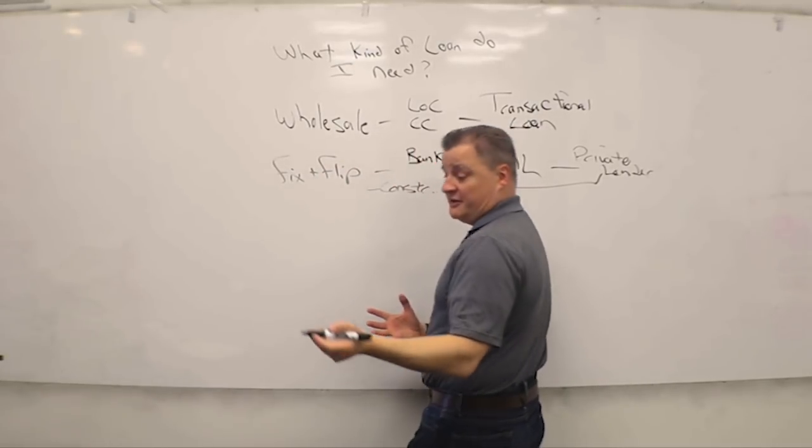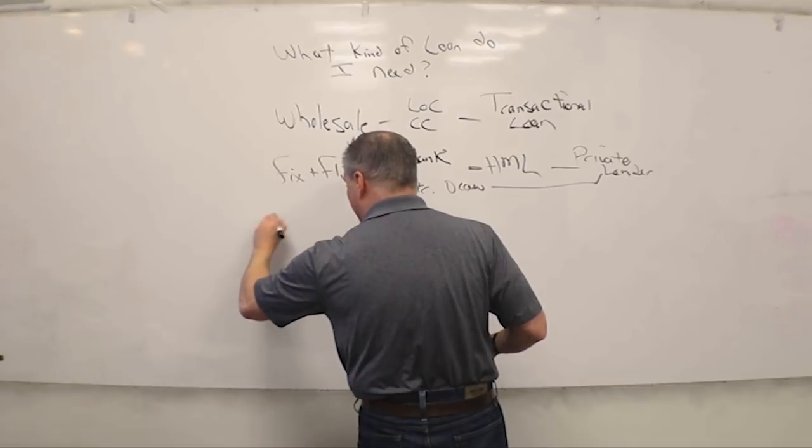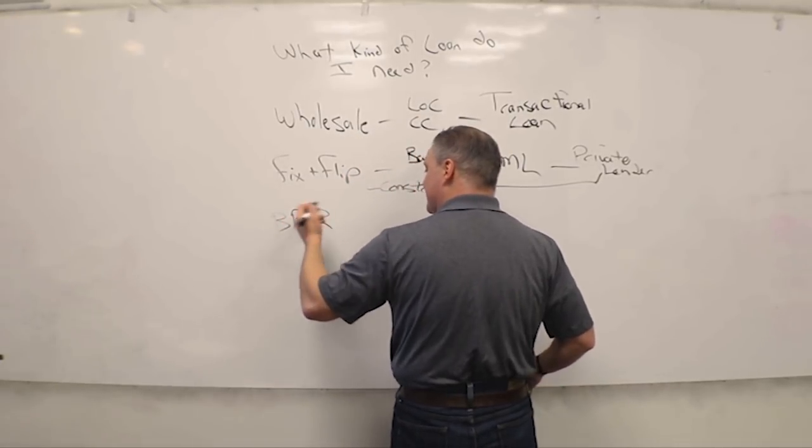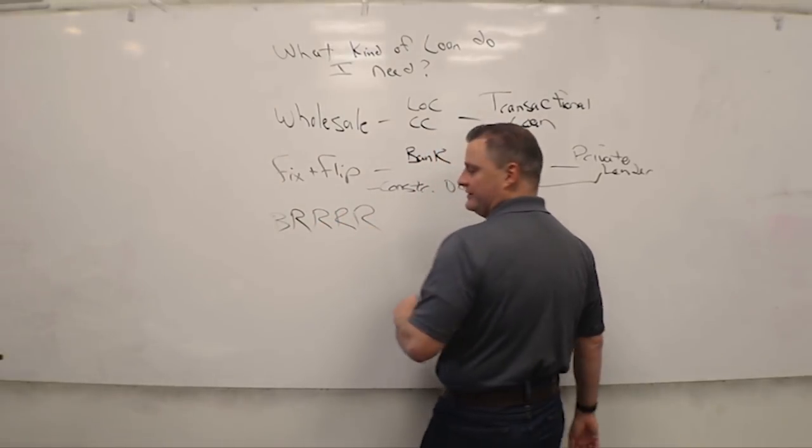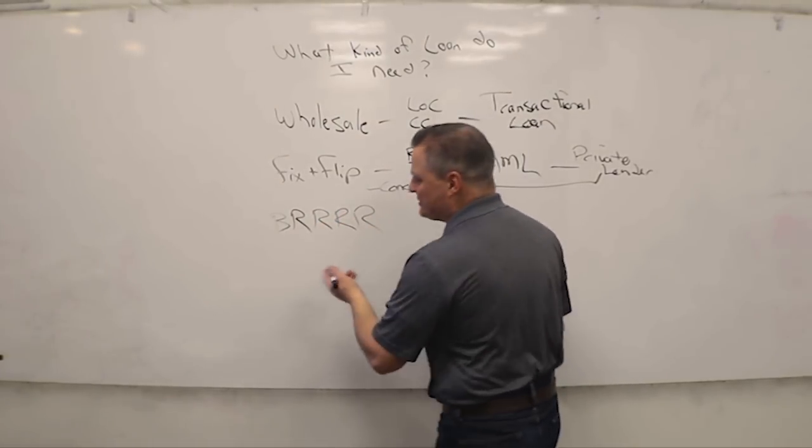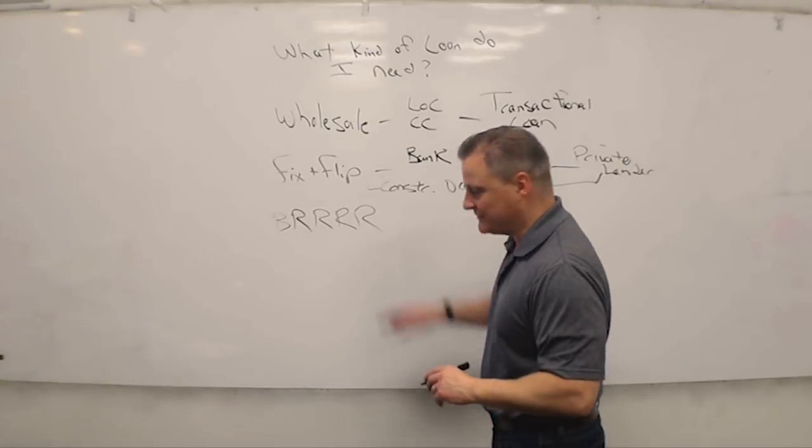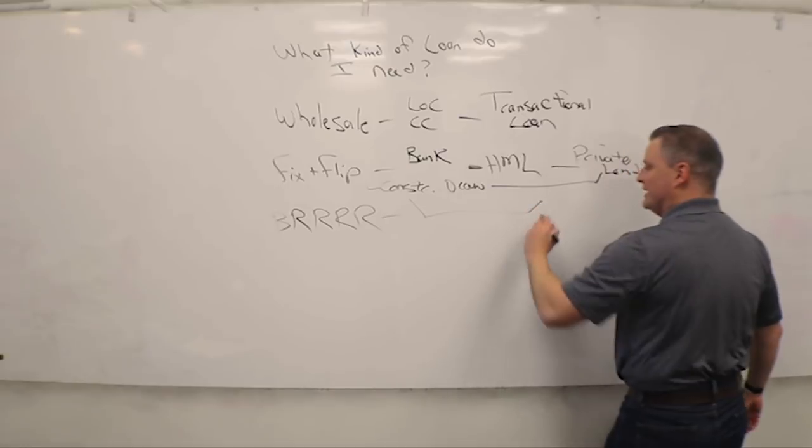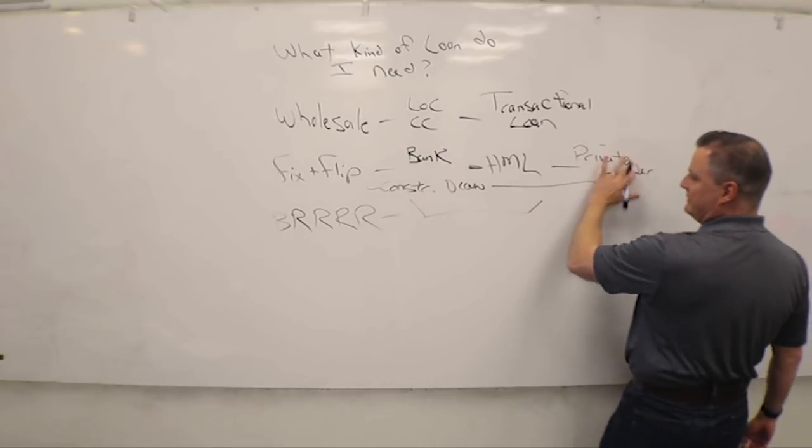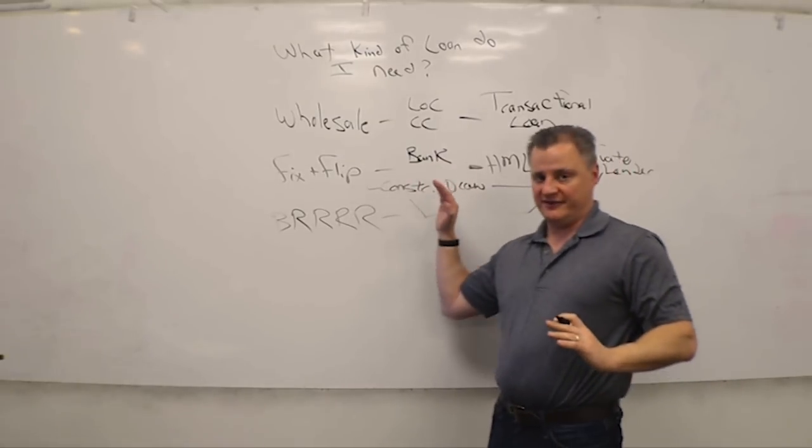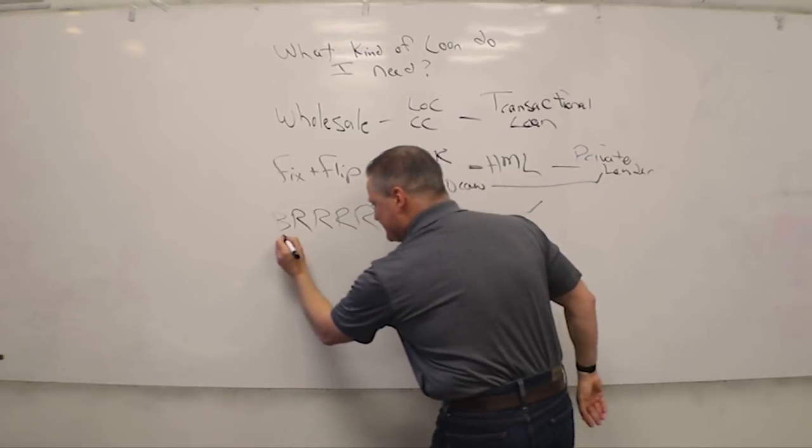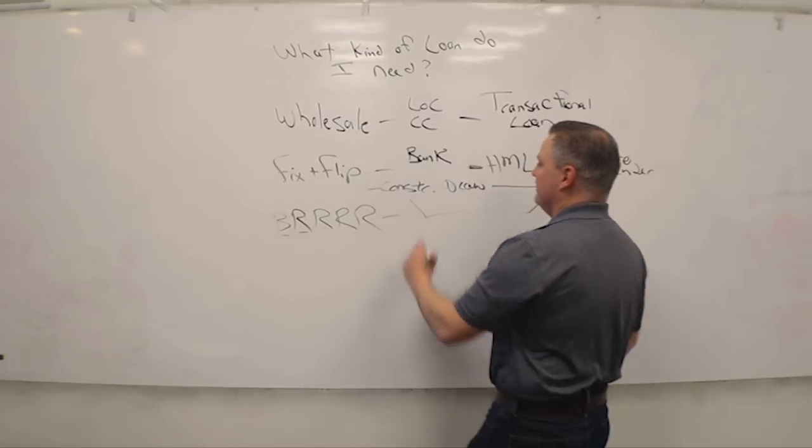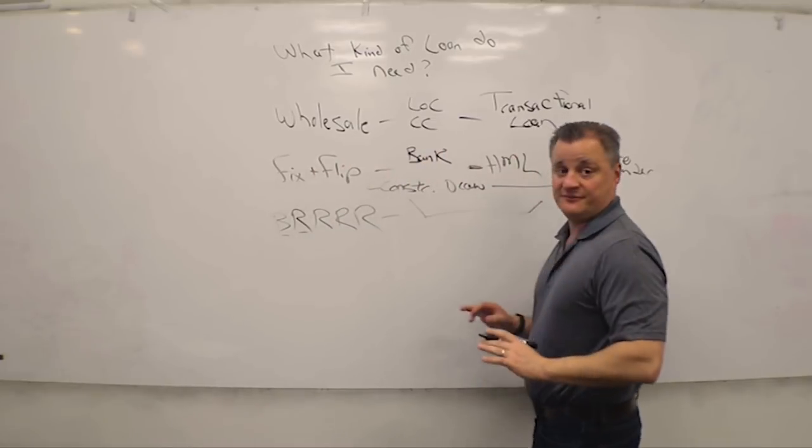The other type of deal that you may have is the BRRRR rental deal, that's buy, renovate, rent out, refinance, and repeat. The BRRRR method is identical to the flip. It's everything here when you buy and renovate the property. So this B and this R are on the same model as a fix and flip.